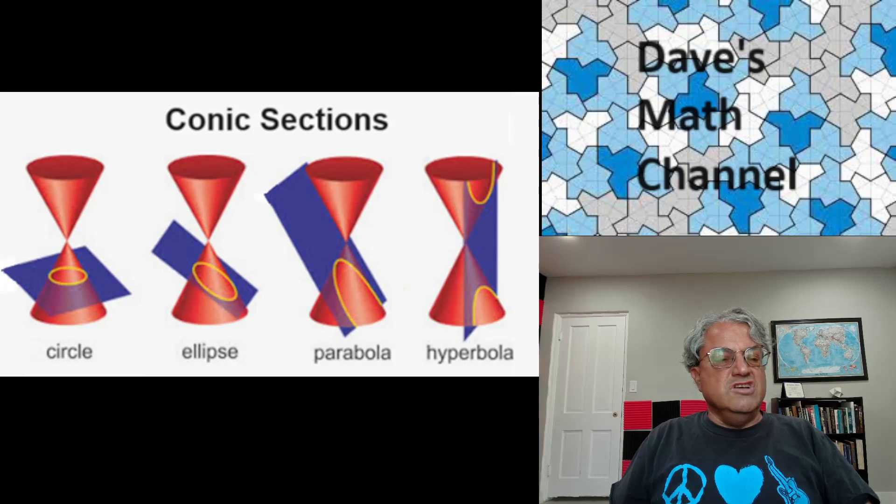And if you tip it even further than that, so that now this plane is intersecting both portions of the cone, you get a hyperbola. And the reason that it's nice to use these two portions of the cone is that the hyperbola actually has two components. And they're kind of symmetric about each other. But anyway, these are the four types of conic sections.